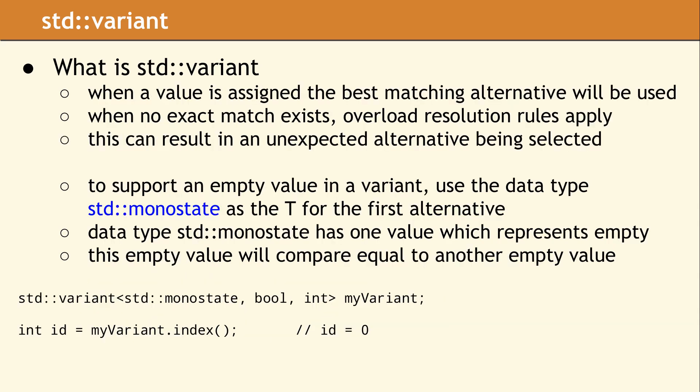Initializing and assigning variants follow the C++ rules for overload resolution. When you initialize a variant, if the value you provide does not exactly match one of the variant alternatives, the compiler will try to find the best match. Sometimes this produces an unexpected choice for which alternative is used. We will show some examples of this shortly.